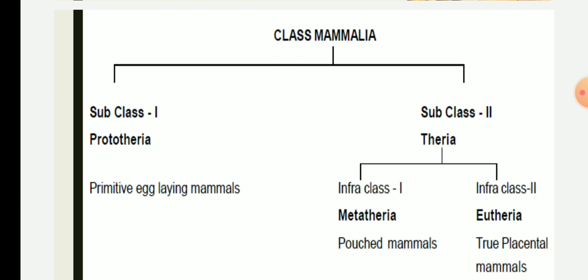Subclass Prototheria is classified into order one, Monotremata. Subclass Theria is classified into infraclass one, Metatheria — which will have pouched animals where mammals have a pouch in which young ones are nourished — and infraclass two, Eutheria, which are the true placental mammals. In today's lecture we are going to see infraclass one, Metatheria, and its classification. Metatheria is further classified into order one only, that is Marsupialia.